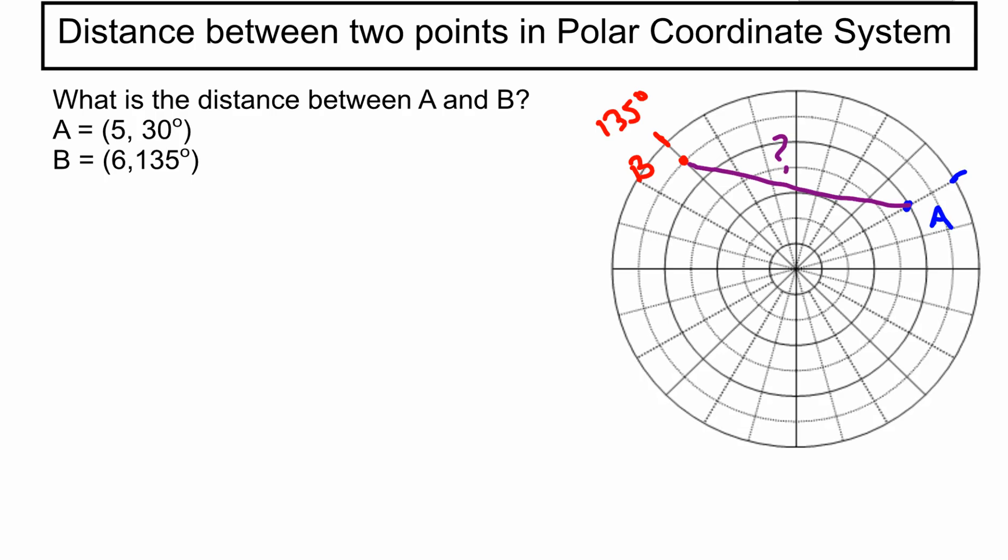So I'm just going to draw a line between A and B. And this is what we're trying to figure out. What I'm going to do, a little foreshadowing, I'm going to call this lowercase c. Okay. So here's what we're going to do.